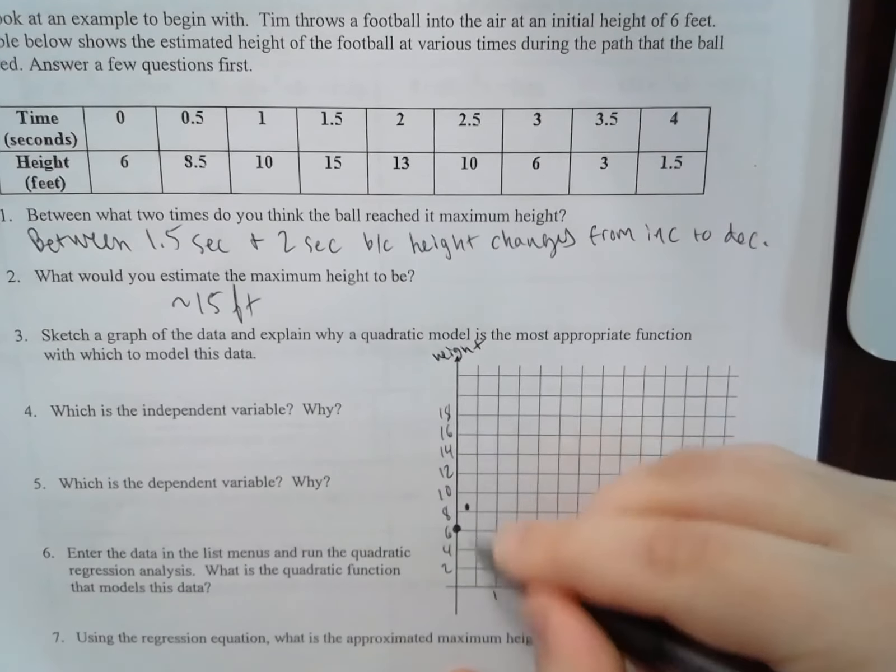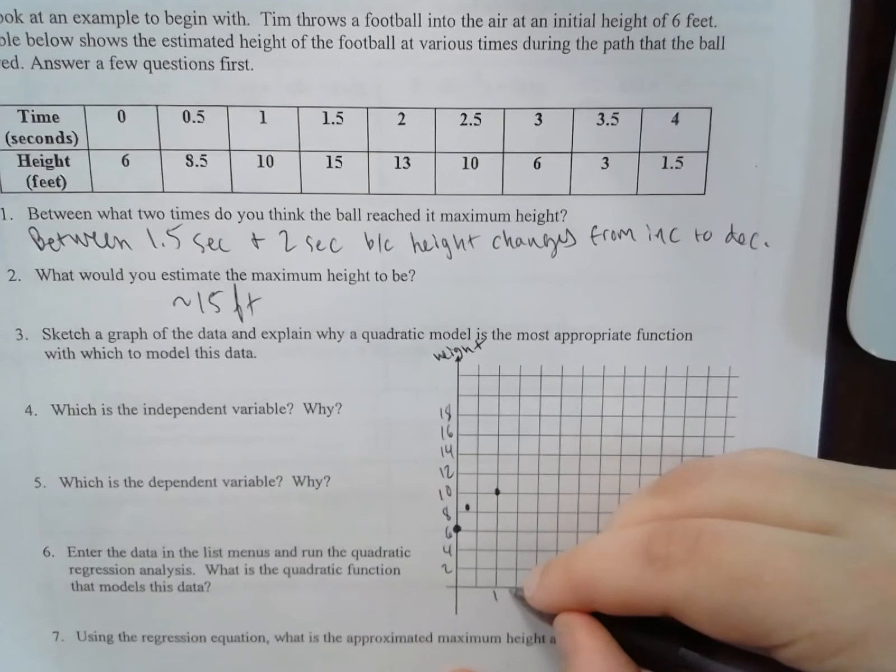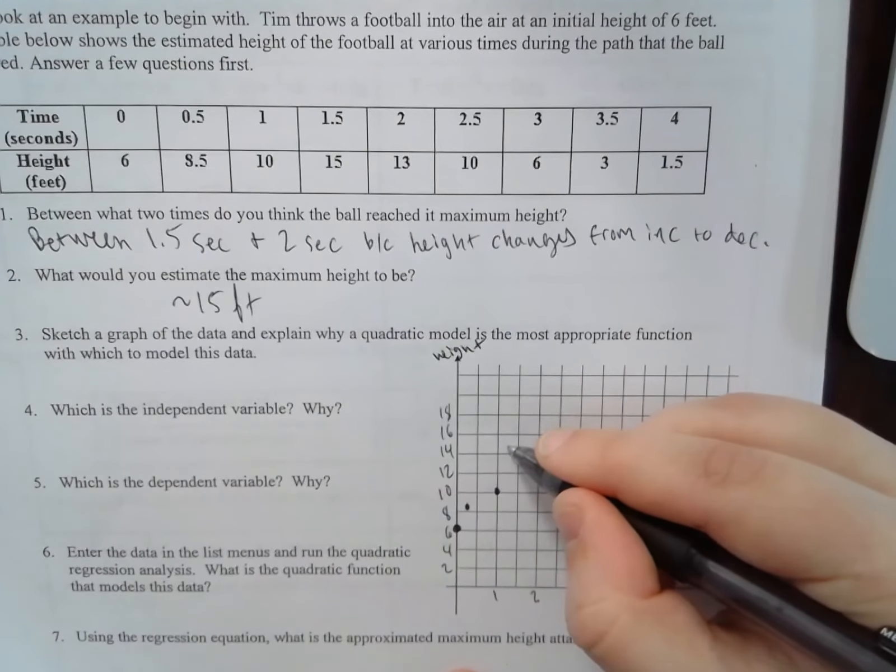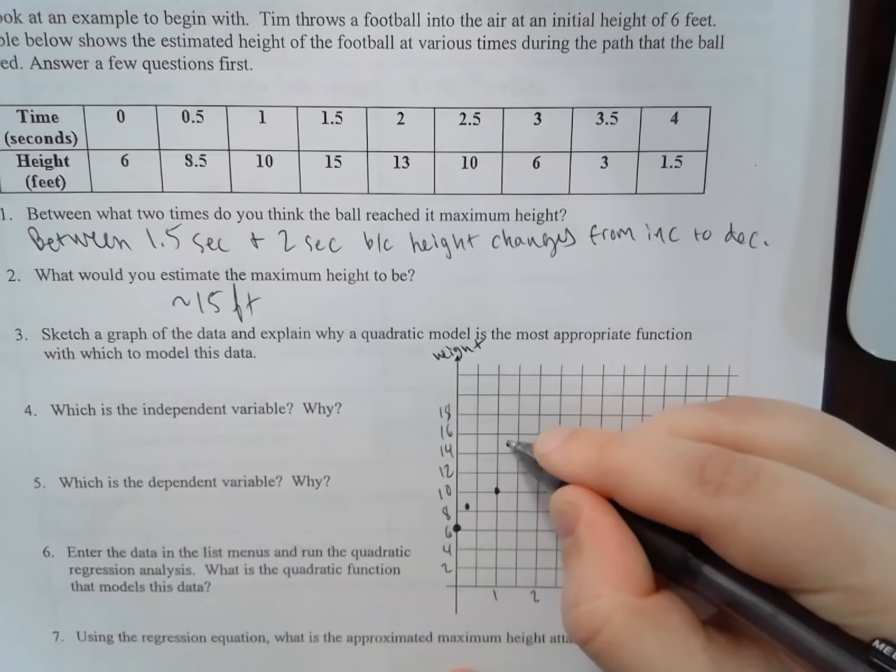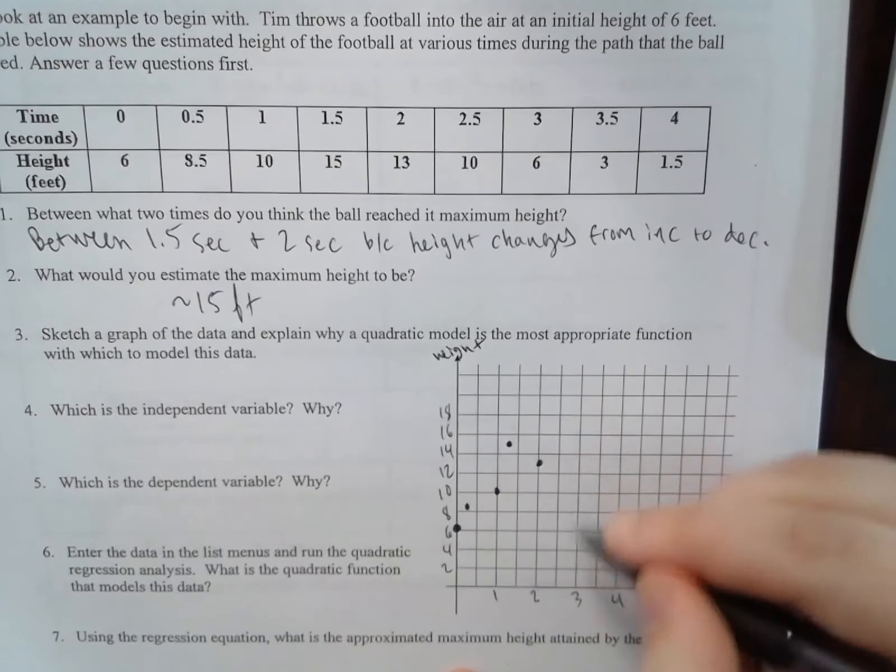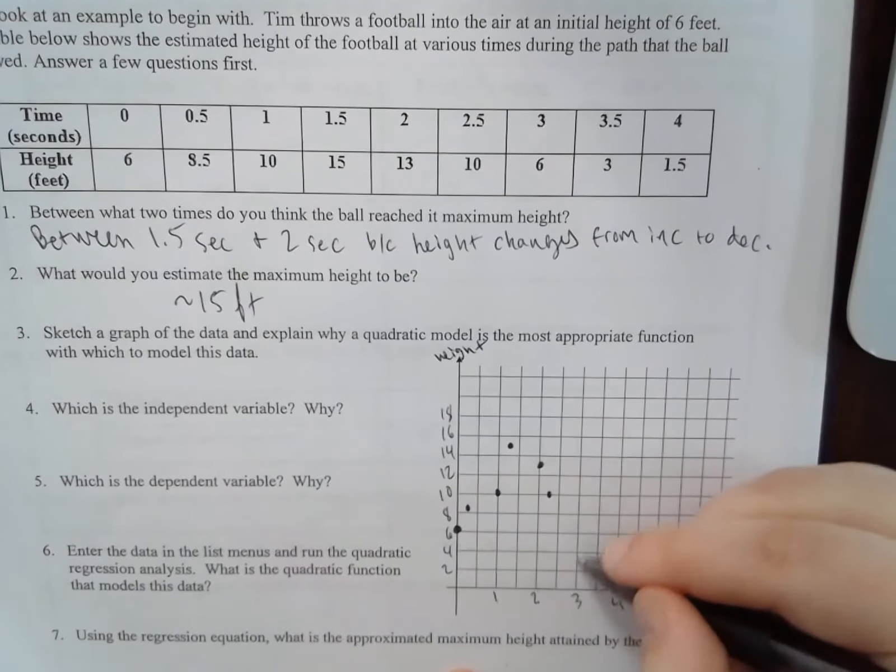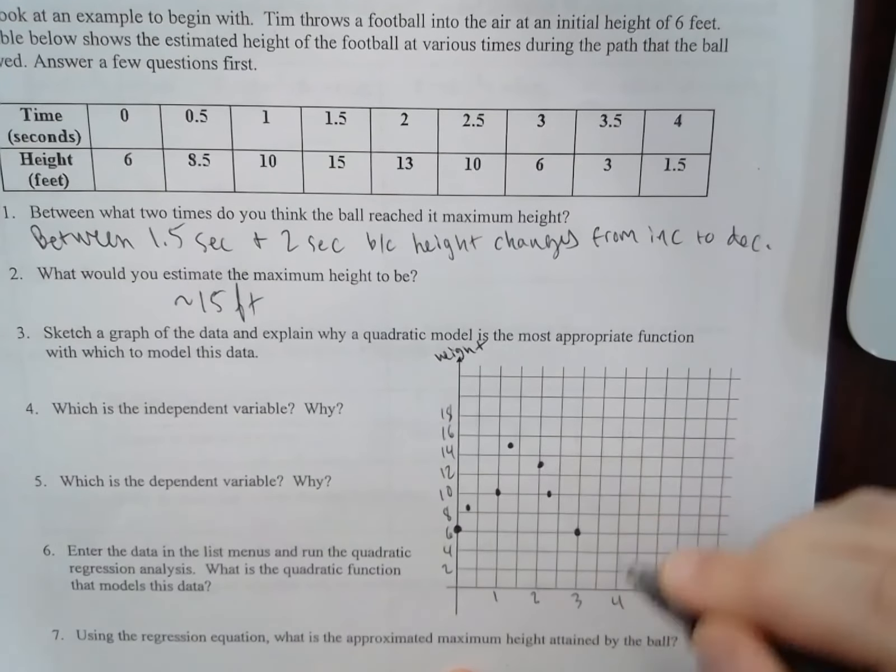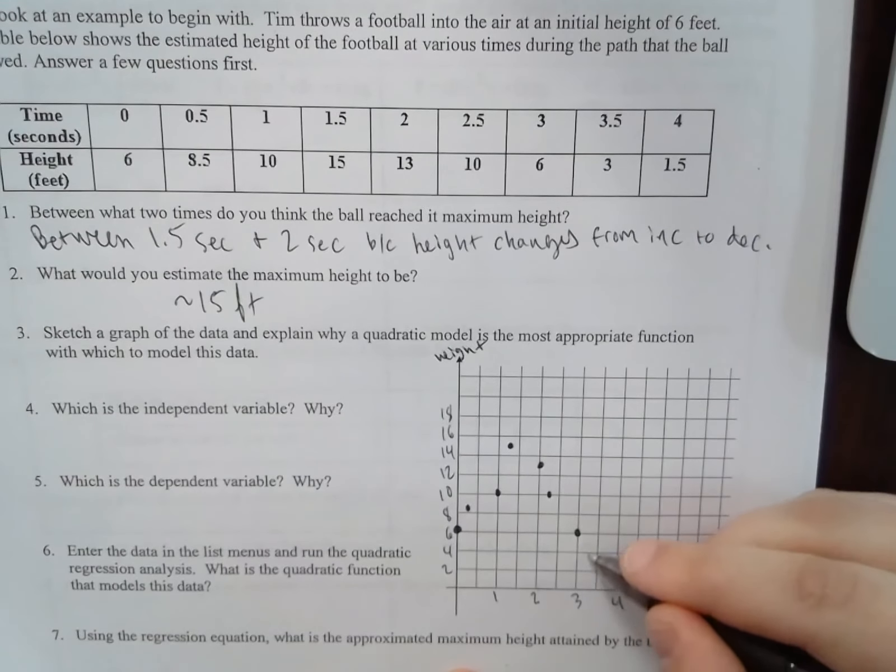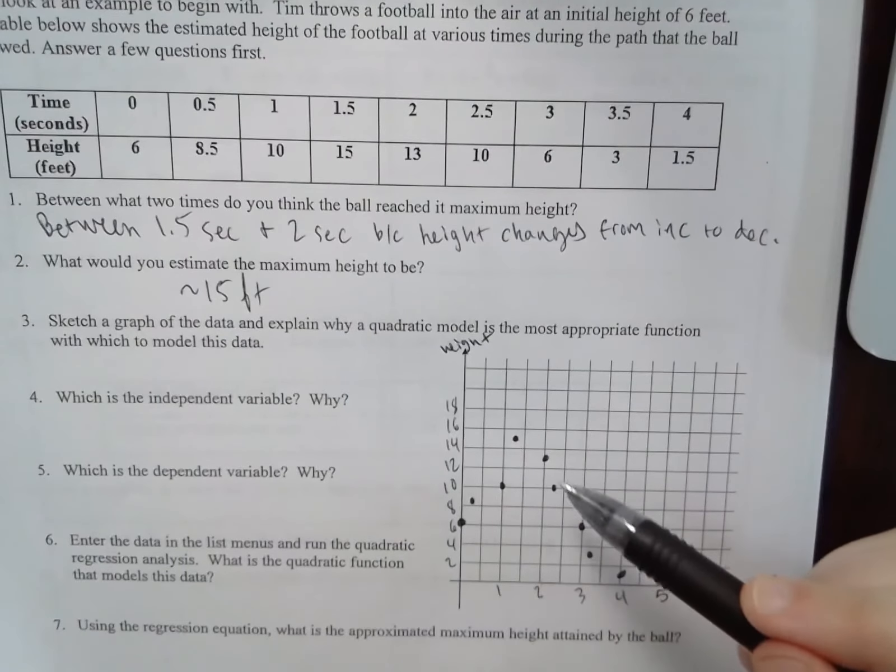So at 0, it's at 6 feet. At 0.5, it's at 8.5. At 1, it's at 10 feet. At 1.5, it's at 15 feet. At 2, it's at 13 feet. At 2.5, it's at 10 feet. At 3, it's at 6 feet. At 3.5, it's at 3 feet. And at 4, it's at 1.5 feet.